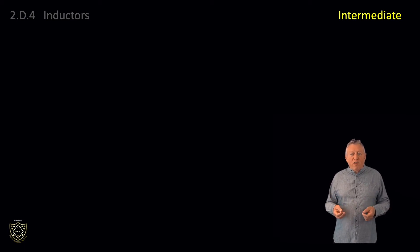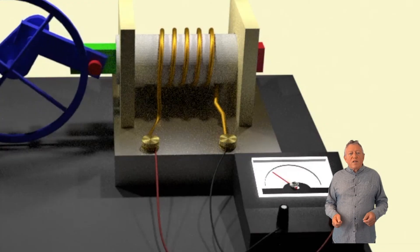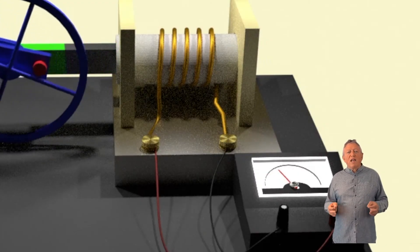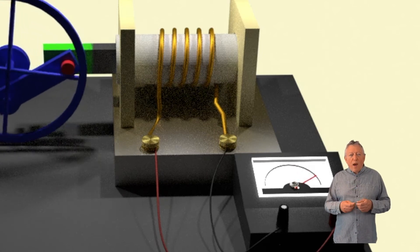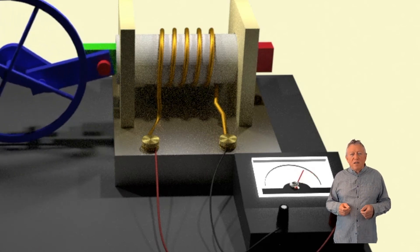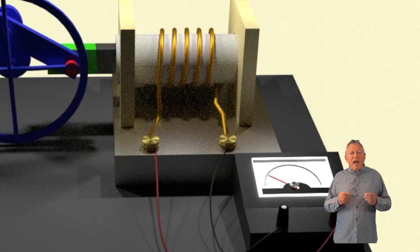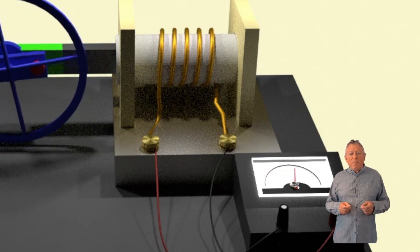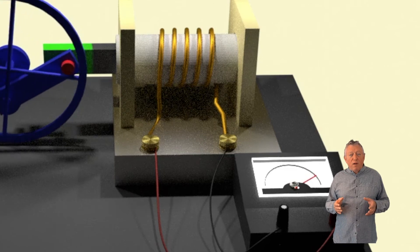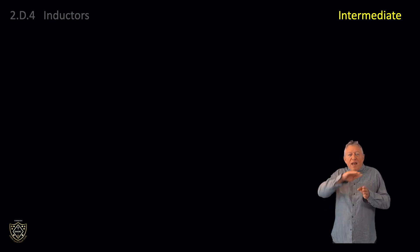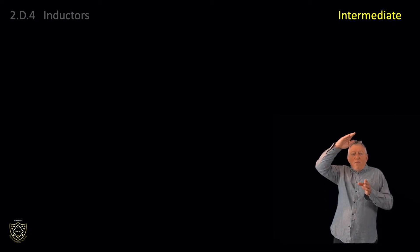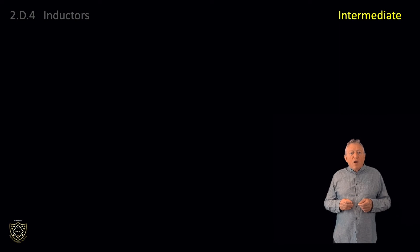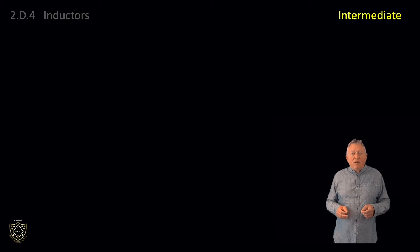This is the generator effect. Notice that the current is at a maximum when the crank is vertical, because that is when the magnet is moving fastest. The output of the AC generator is a sine wave because the velocity of the bar magnet is sinusoidal. As the bar magnet changes direction it is stationary for an instant, and at that point the current is zero. So it is the relative movement of a conductor and a magnetic field that will induce a voltage across the ends of the conductor.